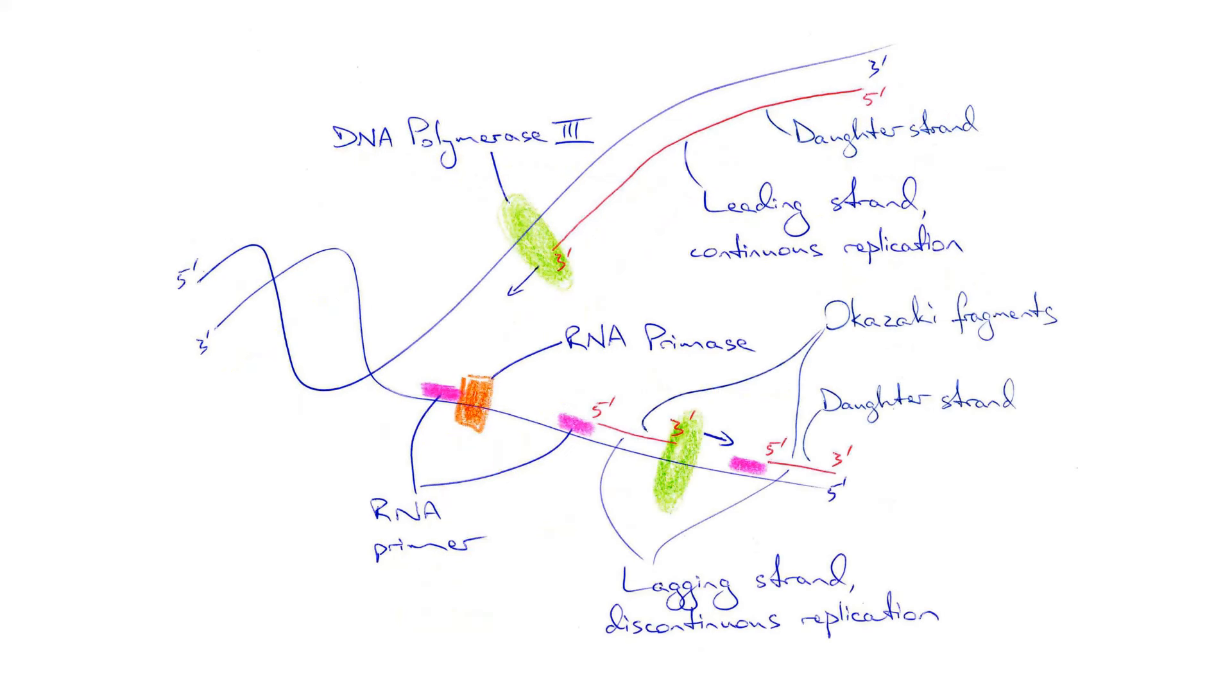The second parent strand is complementary to the first, which means the five prime to three prime direction of its newly synthesized daughter strand is in the direction away from the replication fork.